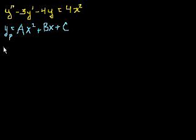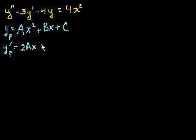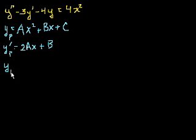What would be its derivatives? The first derivative would be 2ax plus b, and the second derivative would be 2a.